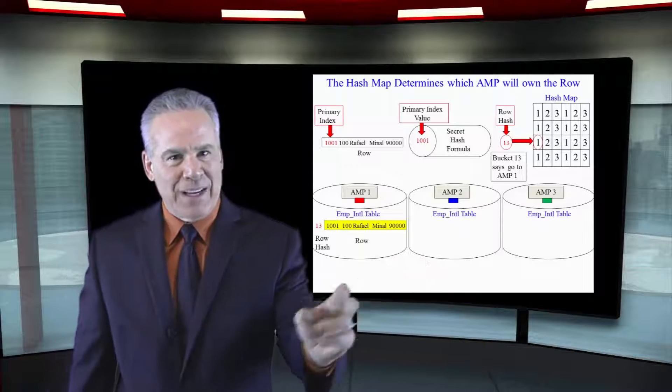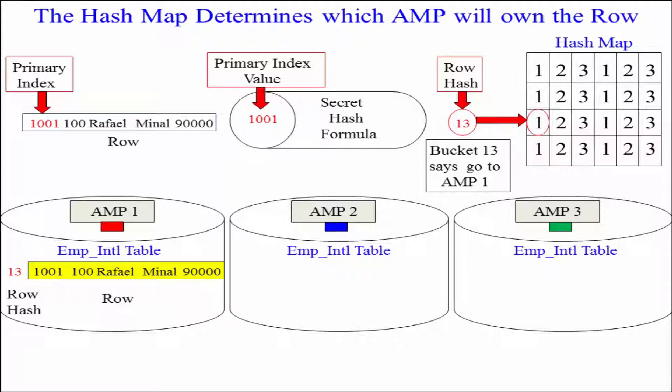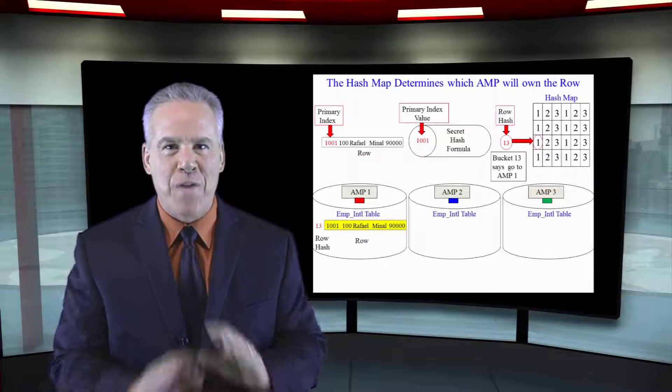Count over 13 buckets in the hash map. What's it say? A 1. We're going to amp 1. Take the row hash with the row, store it on amp 1, and you can see, as I've got down for you in red, that the 13 is right in front of that row, and it will be attached forever.